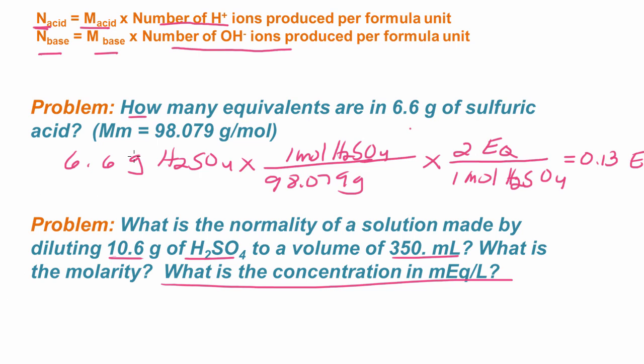Let's go ahead and define. We know normality is the number of equivalents of acid or base, in this case acid, over liters of solution. Well, our volume is 350 milliliters. So that would be the same as 0.350 liters. So what we need to find are the number of equivalents.